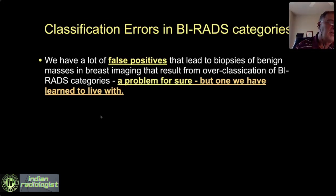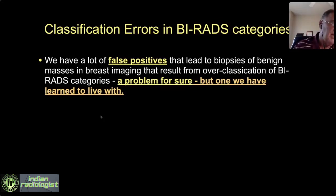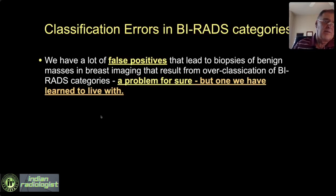Dedicated breast imagers tend to have true positive rates somewhere in the 30% to 40% range. But even for dedicated breast imagers, that means we're getting two out of three negative biopsies for every positive. For non-dedicated breast imagers, it's like four out of five negative. But we've learned to live with these false positives.